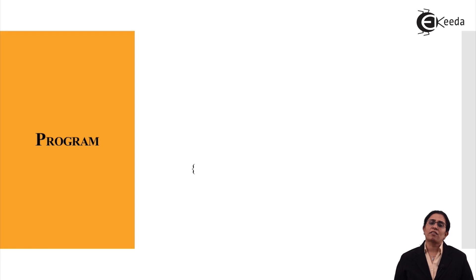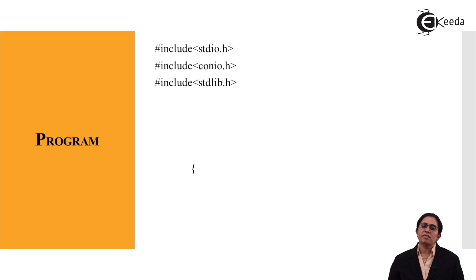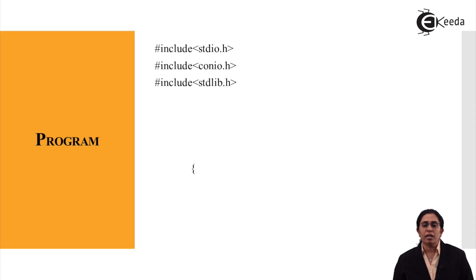This is a strategic approach to show that real-world problems can be implemented and solved using recursion and divide and conquer. We start with the program — it is a simple C program with various header files: stdio.h, conio.h, and stdlib.h.